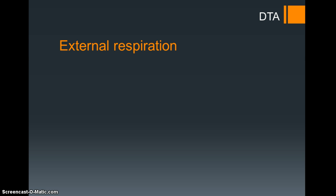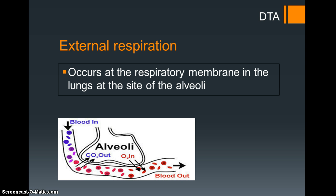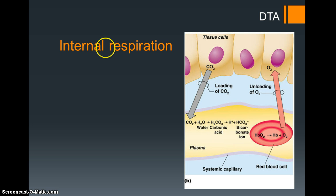There is also external respiration and internal respiration - these are the two sites where diffusion takes place. External respiration occurs at the respiratory membrane in the lungs at the site of the alveoli. This is the transfer of CO2 gases from the capillaries out into the alveoli, and O2 gases from the alveoli into the capillaries. It's called external because there is a more in-depth one further inside the body, which is internal respiration.